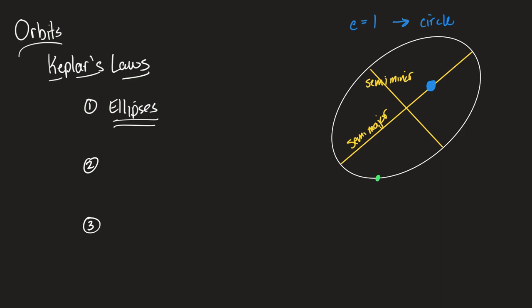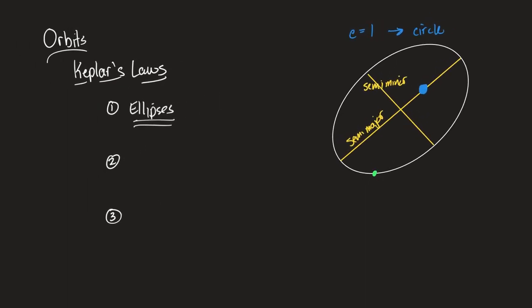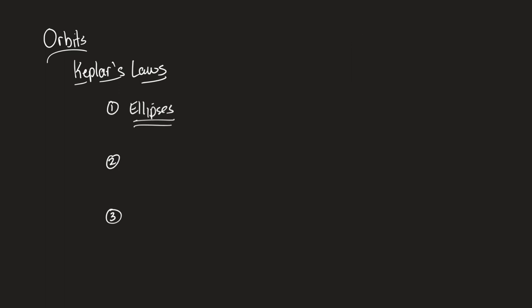His second law we kind of proved yesterday — we proved it for a circle, and it ends up being true for ellipses as well. The law we proved yesterday had to do with a comparison between the gravitational force and the time it takes for an object to orbit. I'm going to use a circular orbit to redo this quickly, since I know not everybody was fully invested and I don't want to lose any ground.